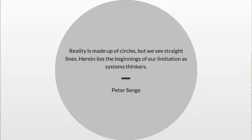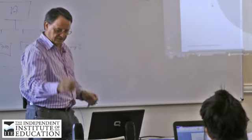Reality is made up of circles, but we see straight lines. And herein lies the beginning of our limitation of our systems thinkers. Because we think on straight lines, cause and effect.